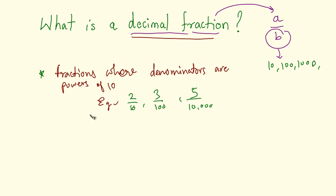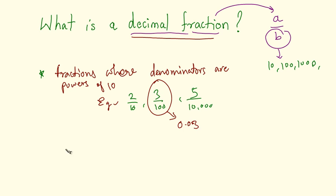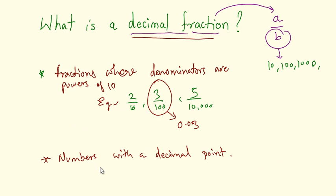We can also say that decimal fractions are numbers with a decimal point, because these numbers can be essentially converted to numbers with a decimal point. For example, 3 by 100 can be written as 0.03. So numbers with a decimal point can also be termed as decimal fractions. A few examples are 0.2, 0.03, 5.1 and so on.